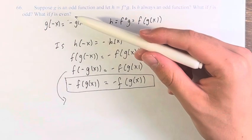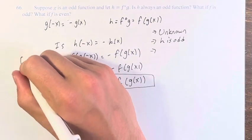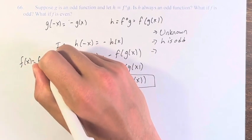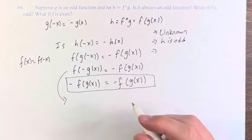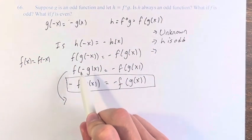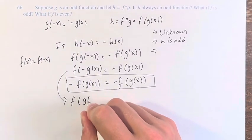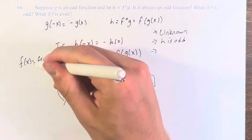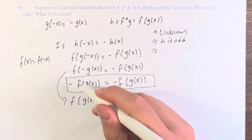If f is even, that means that f of x equals f of negative x. Therefore, f of negative g of x is equal to f of g of x. You can remove the negative sign, and the function stays the same.